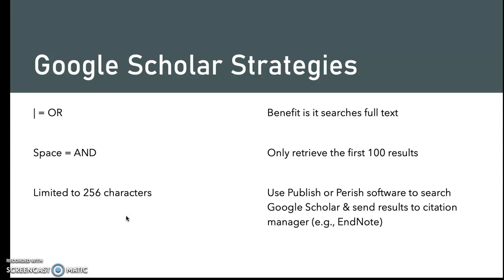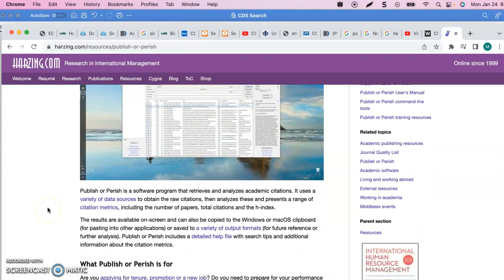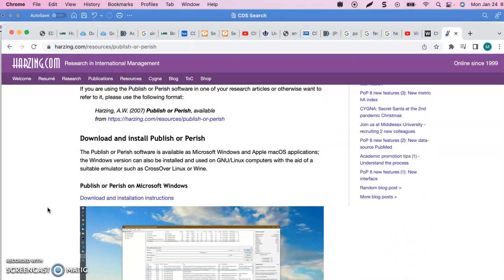I recommend that you use Publish or Perish software to search Google Scholar and send the results to a citation manager — for example, EndNote — because if you search directly in Google Scholar, you have to click each individual citation to send it to EndNote, which is really tedious. With this software, you can bulk export all your citations into your citation manager at one time. The reason I recommend using the bars, spaces, and 256 characters is because it makes it easier to report your methodology and makes your search reproducible. Publish or Perish is free software available for Mac or PC.